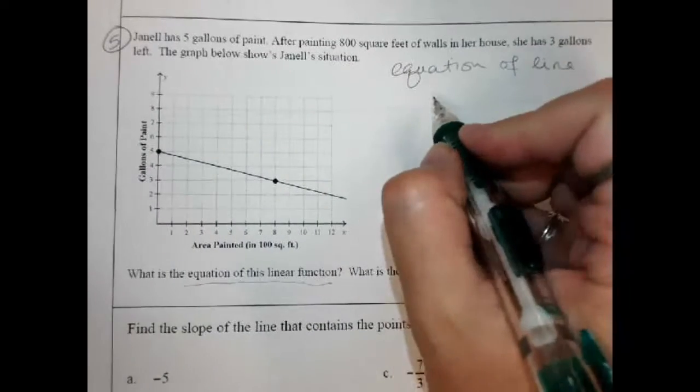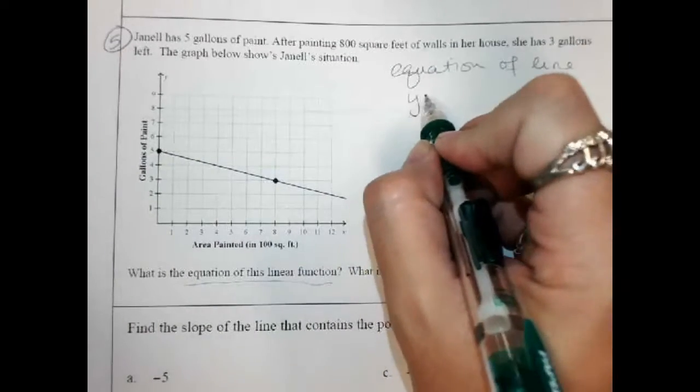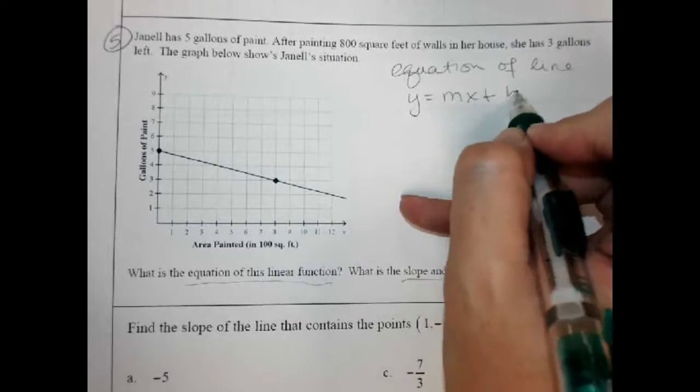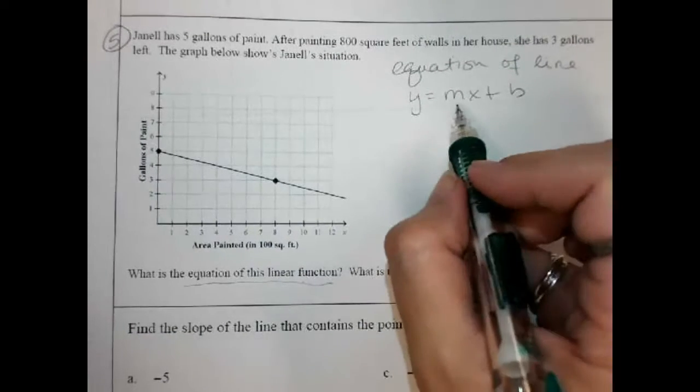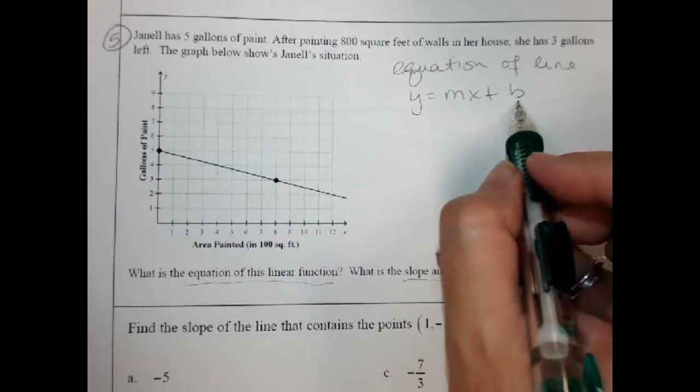I know that the equation of a line y equals mx plus b. You've heard that a thousand times. m happens to be the slope and b is where it crosses the y-axis.